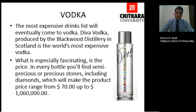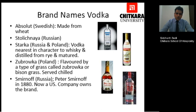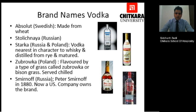Talking about the basic brands of vodka: Absolut, the brand famous from Sweden, is made from wheat. Solchnaya, made in Russia. Stolichnaya, made in Russia and Poland — almost similar to whisky, distilled from rye and matured. Żubrówka, which is flavoured by a type of grass called bison grass, is served chilled — this particular grass is available in Poland. And Smirnoff, another famous brand: Peter Smirnoff started this brand in 1880 and now it is owned by a US company.